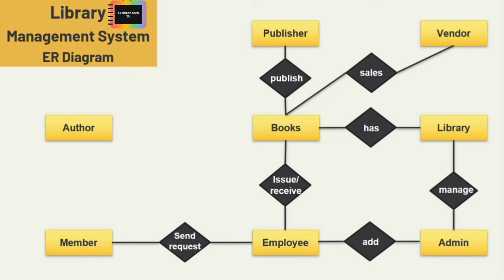Publisher publishes different books, so let's add the relation 'publish' between publisher and books. And last, we have the entity author and books — books are written by author, so I am adding the 'written by' relation here. So these are the relationships I have defined among these eight entities. Now let's see the cardinality ratio between these entities.